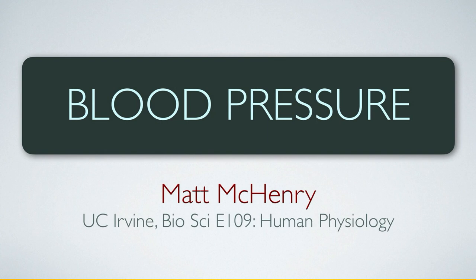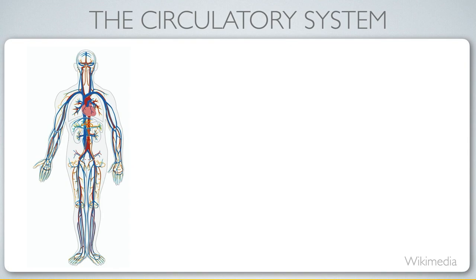We're going to continue with the theme of blood flow, and in this lecture we're going to focus on blood pressure. In the last lecture, we mentioned how it was useful to have the velocity or the speed of flow vary in different regions of the body — in the case of large vessels, fast transport, and in the case of small vessels, slow exchange. You can play a similar game in a consideration of blood pressure.